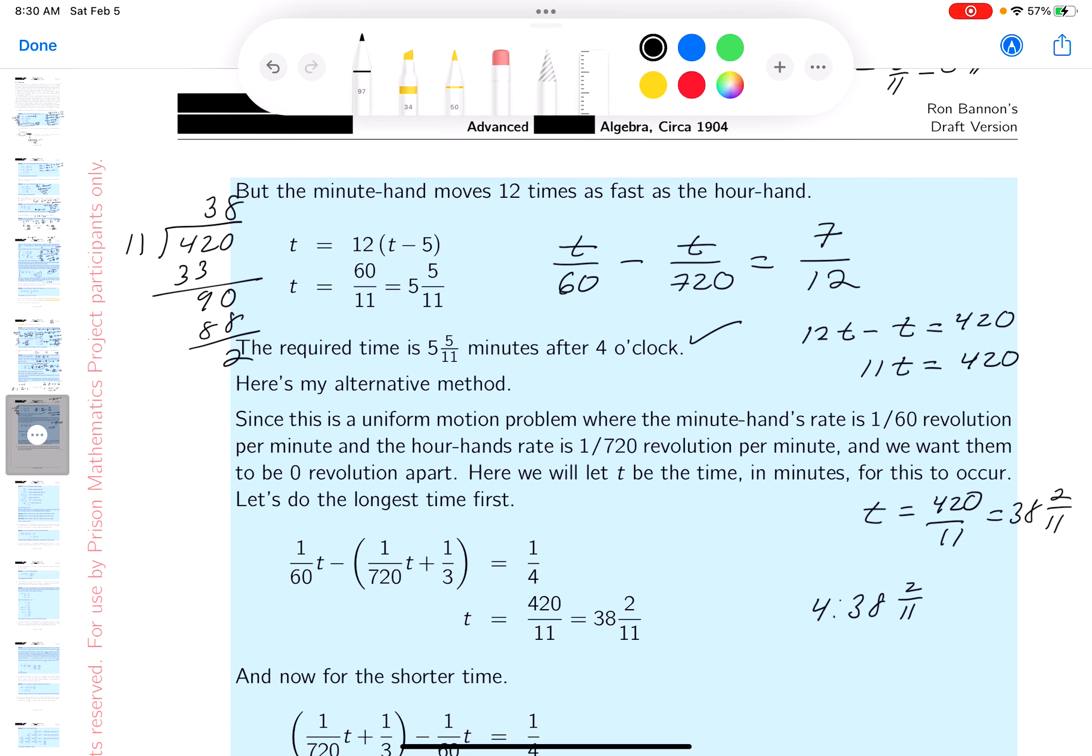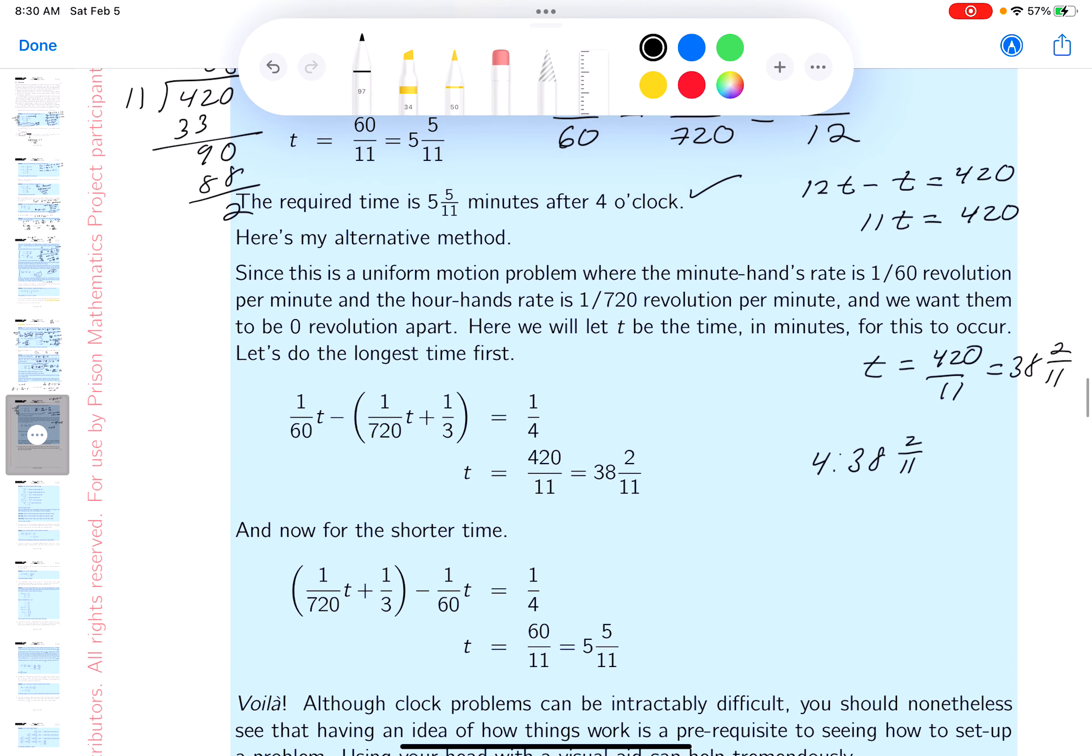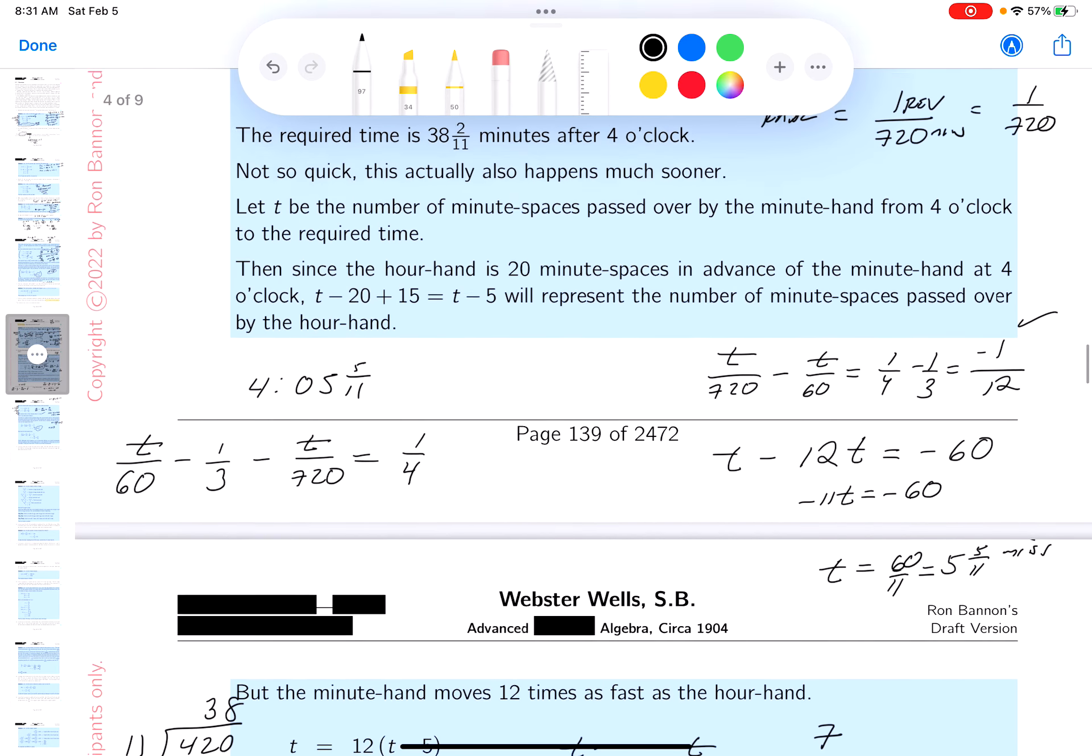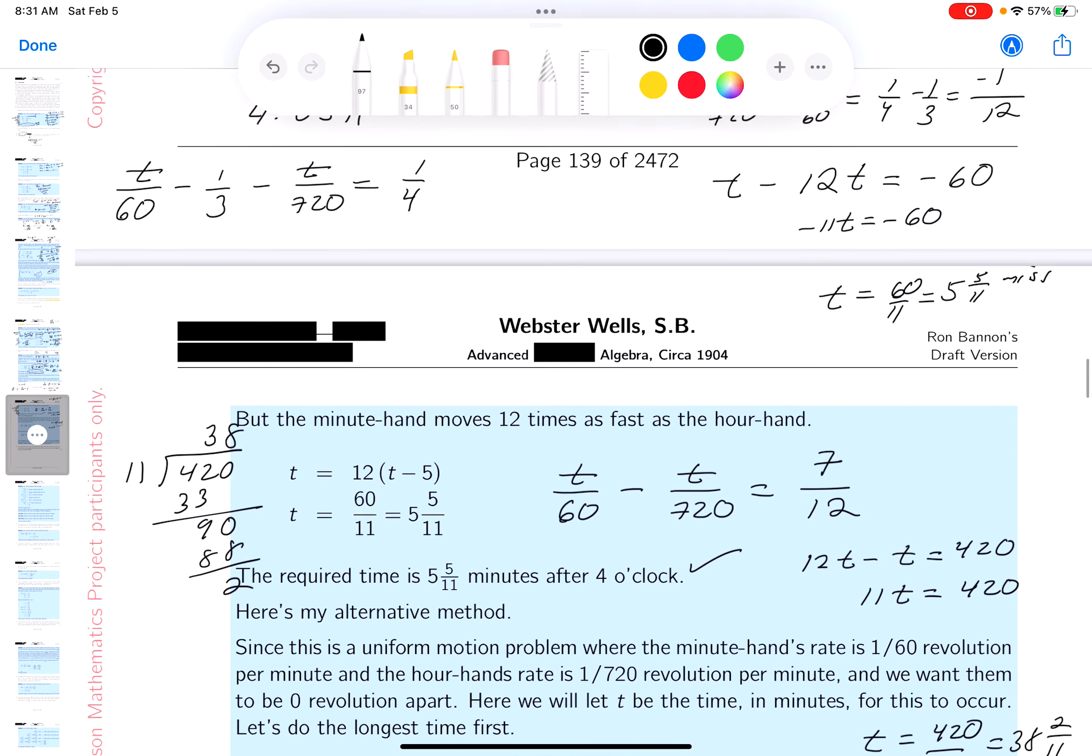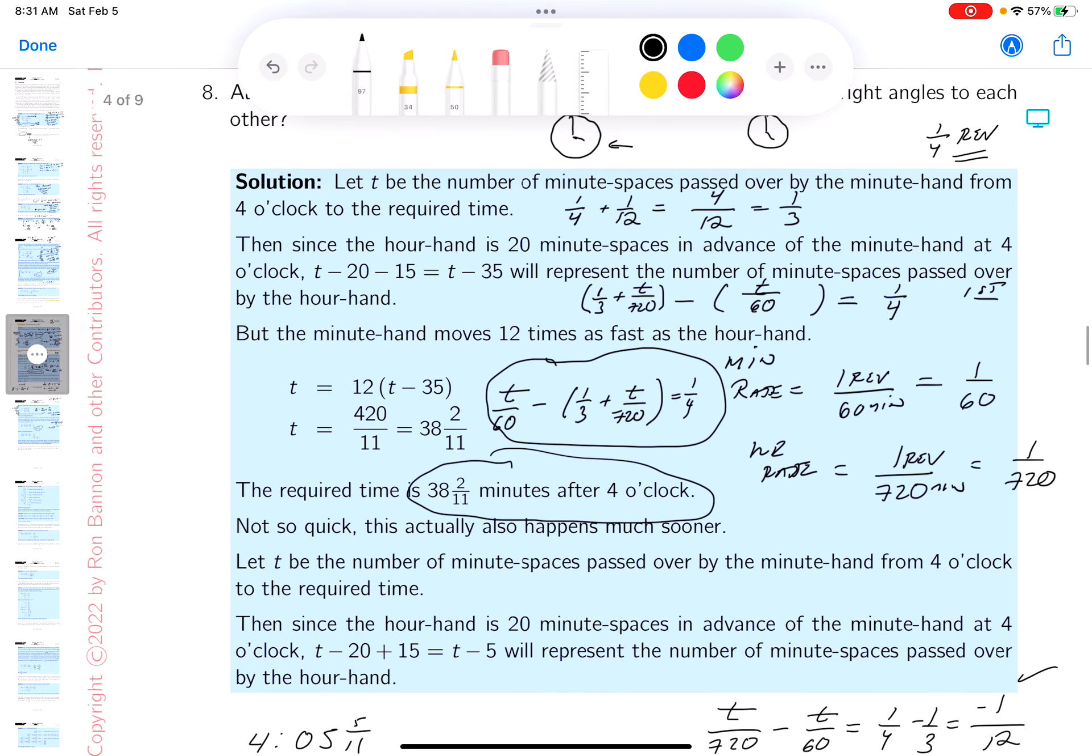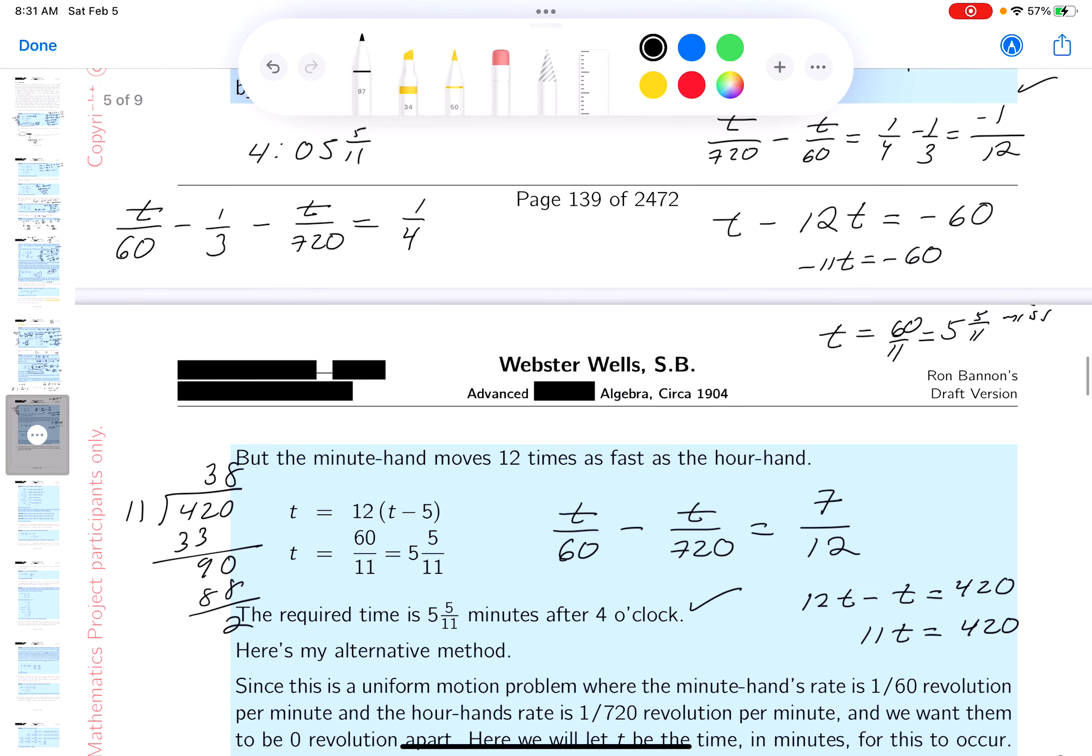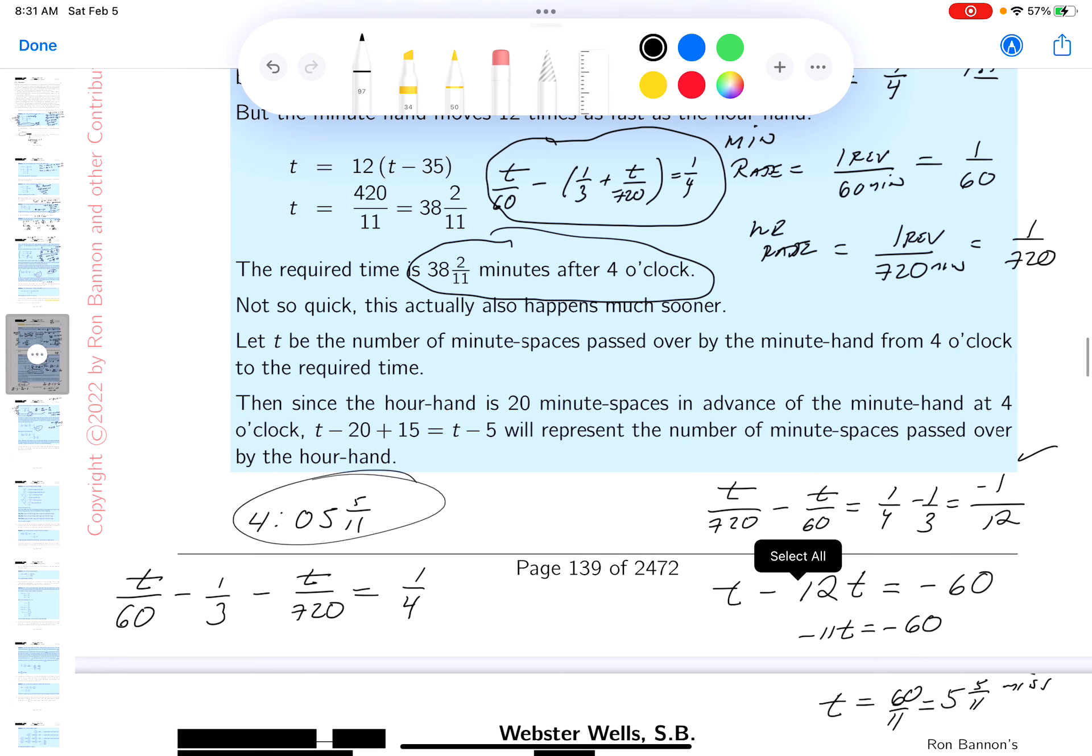These answers are certainly clearly listed for you. Let me make sure they are listed. I want to see if I write the times down. The way I write them, I don't write it with the colon. But I did get this one over here - 38 and 2/11ths past 4 o'clock. And the other one I wrote down was 5 and 5/11ths.